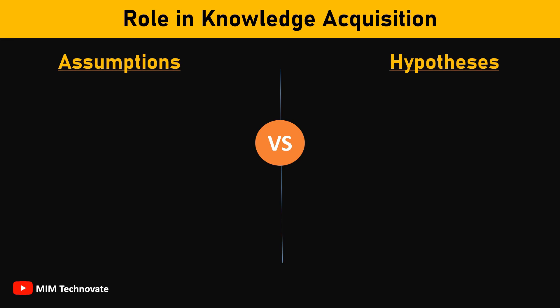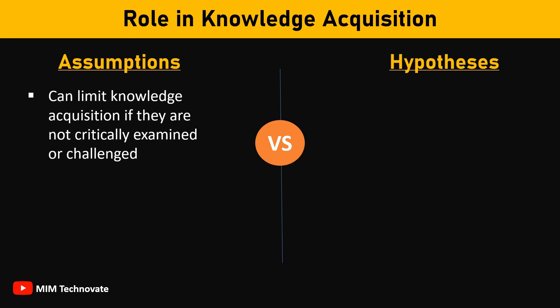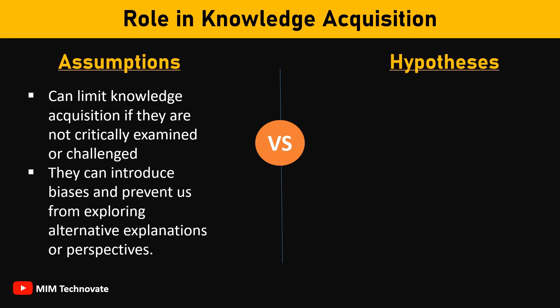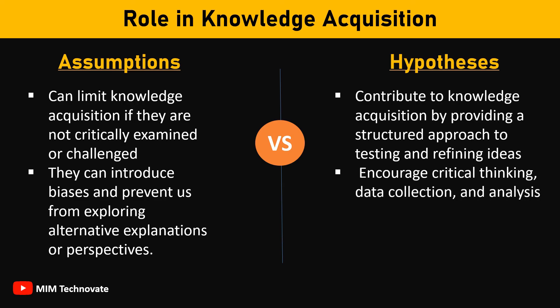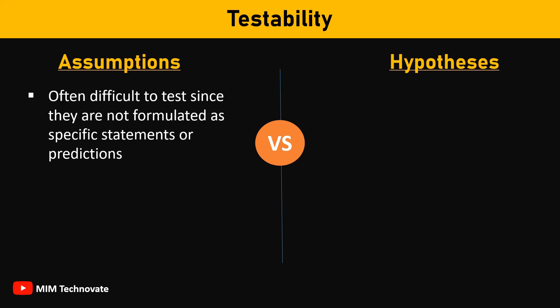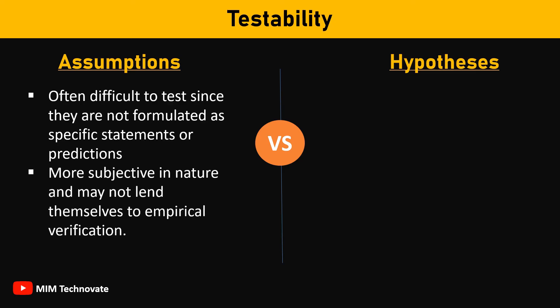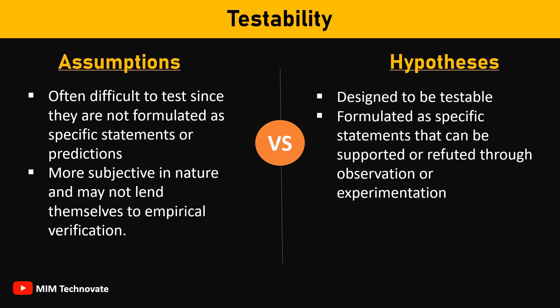Role in knowledge acquisition: Assumptions can limit knowledge acquisition if they are not critically examined or challenged. They can introduce biases and prevent us from exploring alternative explanations or perspectives. Hypotheses, on the other hand, contribute to knowledge acquisition by providing a structured approach to testing and refining ideas. They encourage critical thinking, data collection, and analysis. Testability: Assumptions are often difficult to test since they are not formulated as specific statements or predictions — they are more subjective in nature. Hypotheses, on the other hand, are designed to be testable and are formulated as specific statements that can be supported or refuted through observation or experimentation.